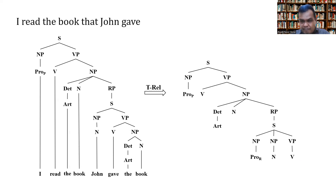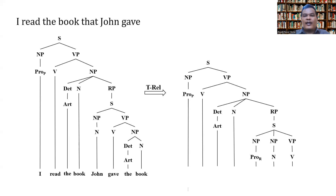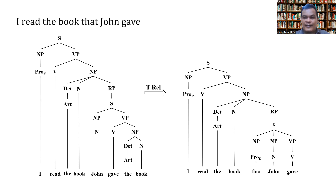Now we have labeled all the elements of the sentence. We just write the given words for each label: 'I' as the personal pronoun, 'read' as the verb, 'the' as the article, 'book' as the noun, 'that' as the relative pronoun — this is our focus — and then 'John' as the noun and 'gave' as the verb. That's how we analyze the sentence 'I read the book that John gave' using a tree diagram.